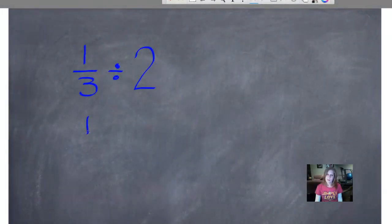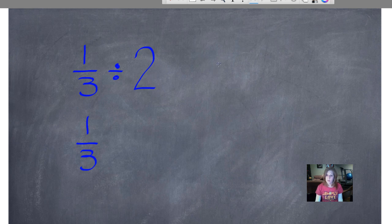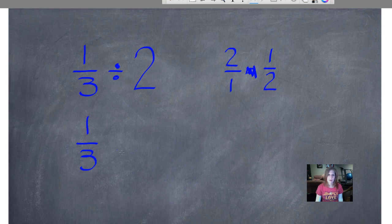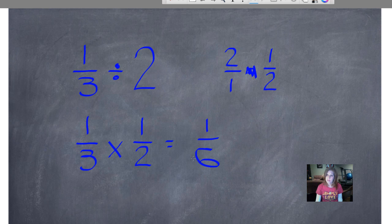Let's see how we did that. So we rewrite this problem using the reciprocal of 2. If 2 written as a fraction is 2 over 1, then the reciprocal is 1 over 2. So we're going to multiply 1 third times 1 half, and we get 1 times 1 is 1, 3 times 2 is 6. 1 sixth is our answer.